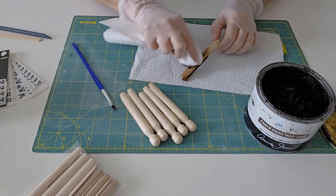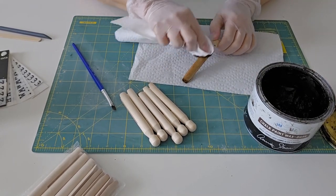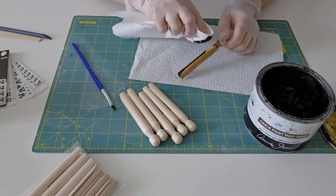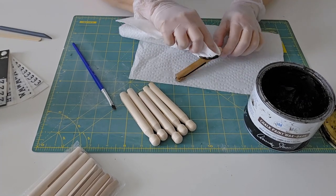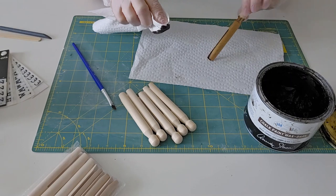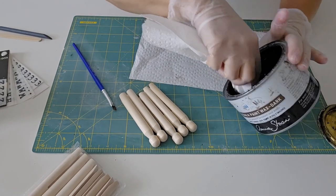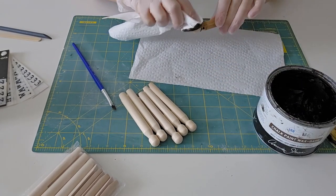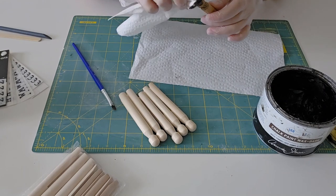Flip it around and let's do the little ball head. Now I'm going to set this aside and then we'll buff it when I've finished all six.